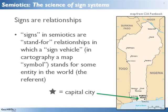But what does that really mean? A first step in understanding this rather complex field of semiotics is to understand that the term sign here has a very special meaning. A sign in semiotics is a relationship in which one entity, called a sign vehicle, stands for another, called the referent.